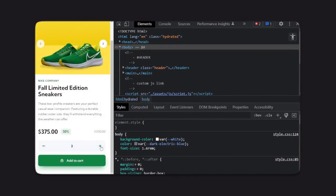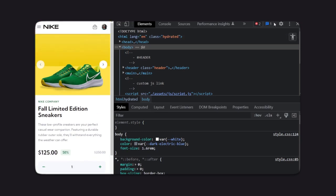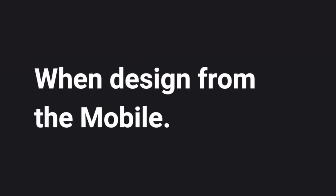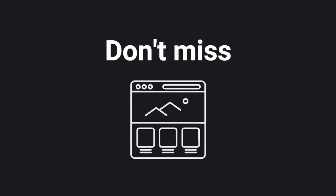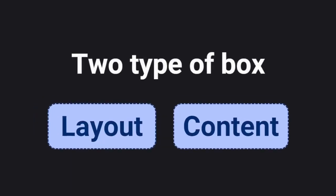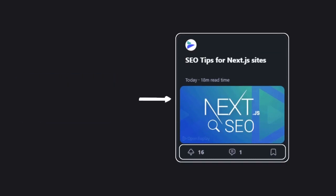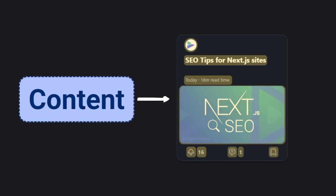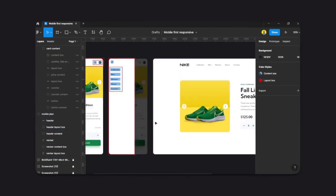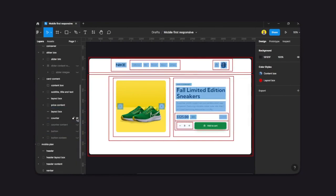Before we start this project, we need to know some basic things. When you start designing from the mobile, you need to care about the project plan so that we don't miss any layout box. Basically, there are two types of boxes in a webpage: layout box and the content box. Layout box is essentially a container that wraps HTML elements, where the content box usually contains website content like titles or images. Let's look into more practical ways of how they actually work.